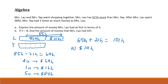Mrs. Lao had one unit left after spending 85h. One unit represents 16h. So to find the amount of money Mrs. Lao had left, you take 16 times h, and h equals 8, so 16 times 8. The final answer is $128.